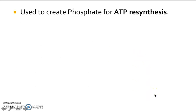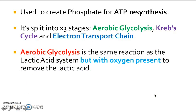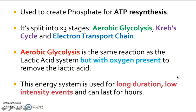In essence, the key points of this aerobic system is that it's used to create phosphate for ATP resynthesis. It splits into three stages: aerobic glycolysis, Krebs cycle, and electron transport chain. The aerobic glycolysis, the same reactions as the lactic acid system, but you've got the presence of oxygen to prevent lactic acid buildup through the conversion of the pyruvic acid. The energy system is used for long durations, low intensity, and going to last for hours.